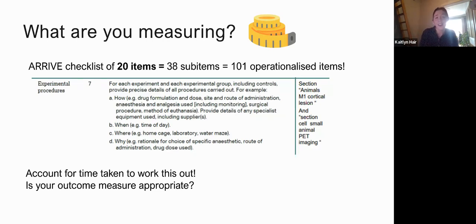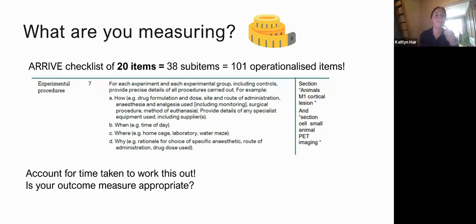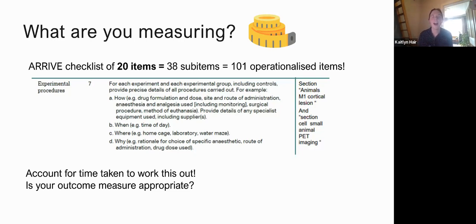An important thing to consider is what you're actually measuring. We took the existing ARRIVE checklist — 20 items — which on first glance looked well defined. But the more we went into it, we discovered it wasn't 20 items, it was 38 sub-items, and then actually 101 things when you really break it down. One sub-item says 'how were procedures carried out' — but that covers drug formulation, dose, route of administration, anesthesia, surgery — multiple questions in one sub-item.